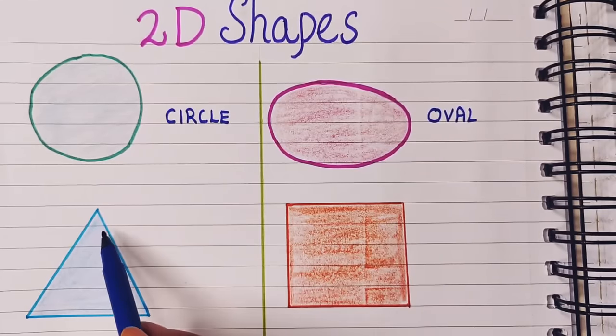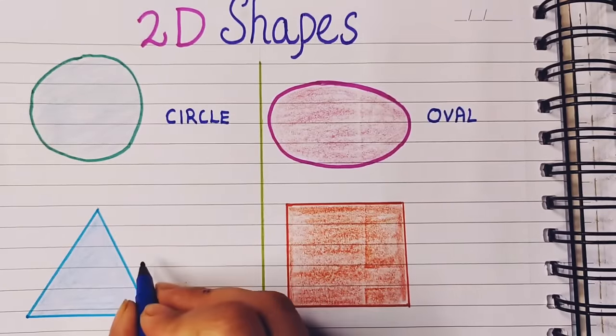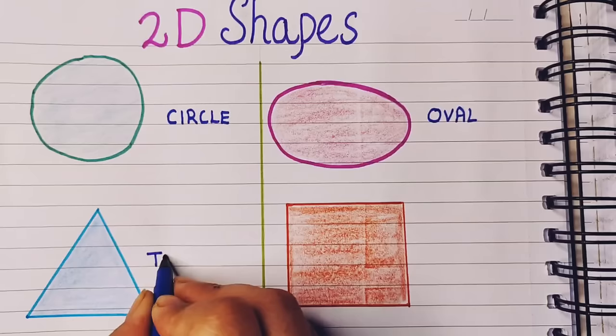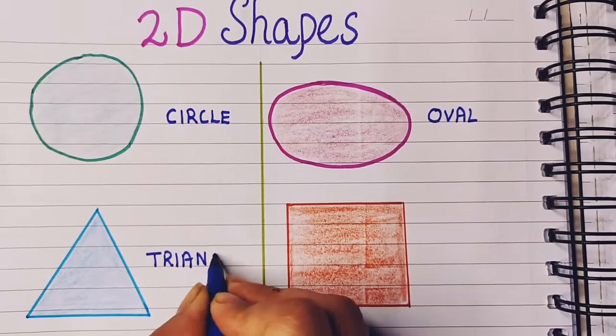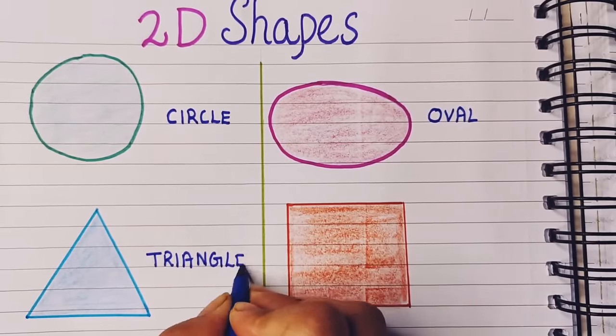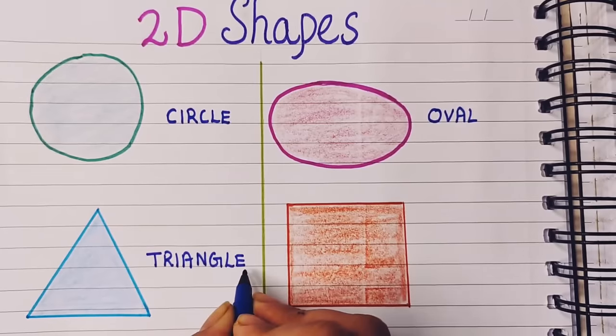The next shape has three sides and three corners. It is a triangle. Triangle: T-R-I-A-N-G-L-E, triangle.